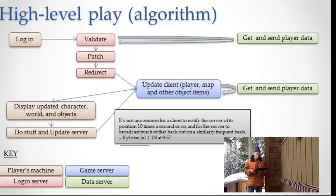And so in this little box here, you have a little quote. It's not uncommon for the client to give its position, its updates to the server, 10 times a second. So that's how fast this loop is going. It's going round and round and round. You're communicating to the server. The server is communicating to your client, back and forth, really quickly. The more quickly it can communicate, the more seamless all of that interaction is going to be.